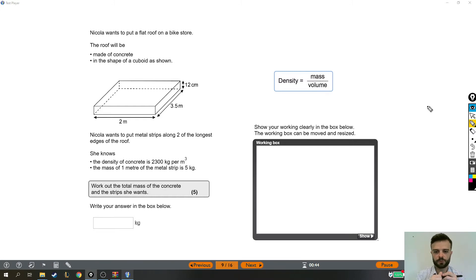Nicola wants to put metal strips along two of the longest edges of the roof. She knows the density of concrete is 2,300 kilograms per meter cubed. And the mass of one meter of the metal strip is 5 kilograms. Work out the total mass of the concrete and the strips that she wants.